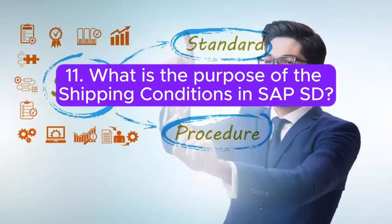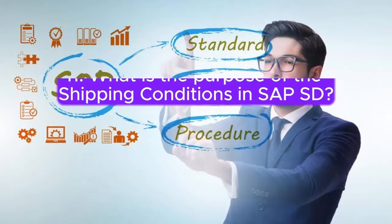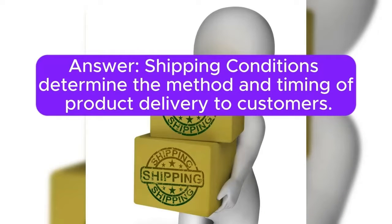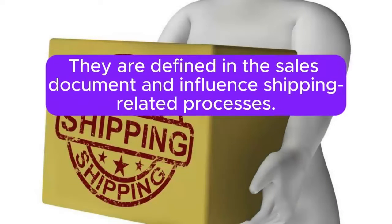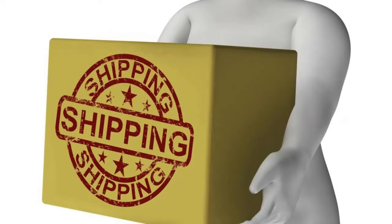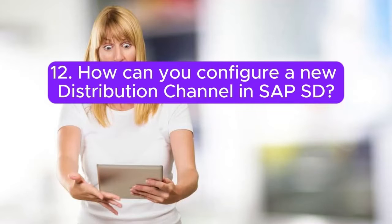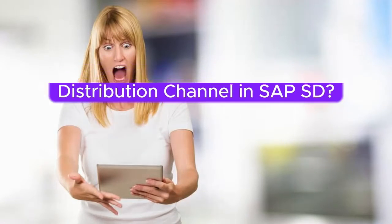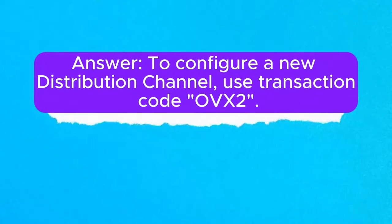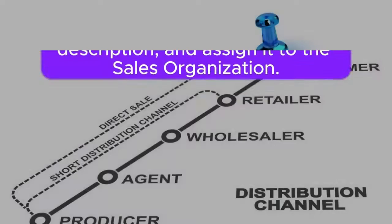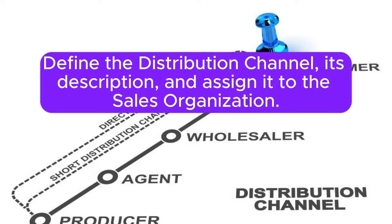Question 11: What is the purpose of the shipping conditions in SAP SD? Answer: Shipping conditions determine the method and timing of product delivery to customers. They are defined in the sales document and influence shipping-related processes. Question 12: How can you configure a new distribution channel in SAP SD? Answer: To configure a new distribution channel, use transaction code OVEX2. Define the distribution channel, its description, and assign it to the sales organization.